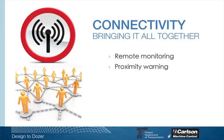When everything is connected together, we can also set up proximity warnings, which is a good safety feature. If two machines are getting within a certain proximity of each other on the network, proximity bubbles can pop up and warn each operator that they are getting close. Each operator is able to see all of the other machines working on the site.